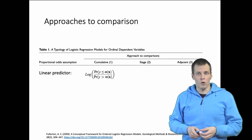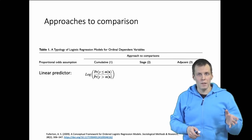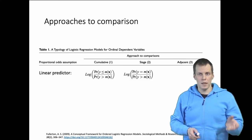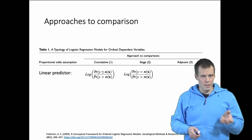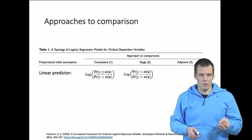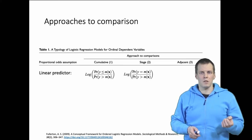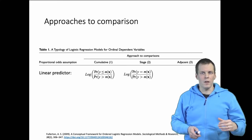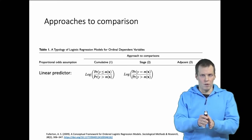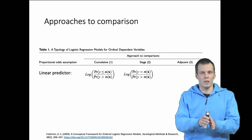So that's the ordinal ordered approach. Then you have the stage approach, and the stage approach asks or answers slightly different questions. It answers the question: given you have reached a particular value, what is the probability of going beyond?